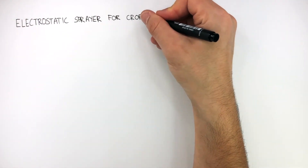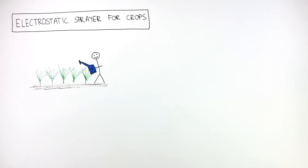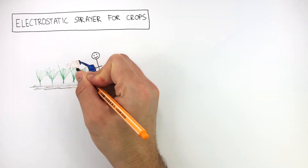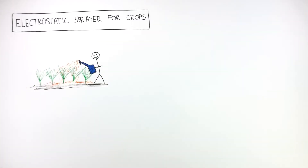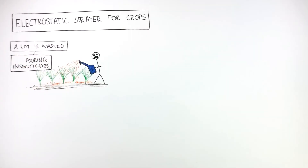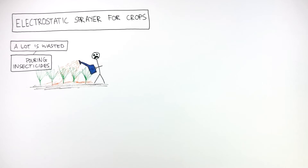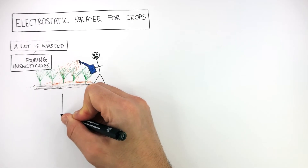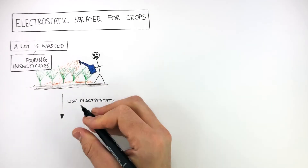Electrostatic sprayers for crops are really useful because when someone is pouring insecticides onto their crops, a lot is wasted. The wastage of these insecticides is a problem for farmers as they waste money. Insecticides are chemicals which kill insects. A solution to this problem is to use electrostatic sprayers.